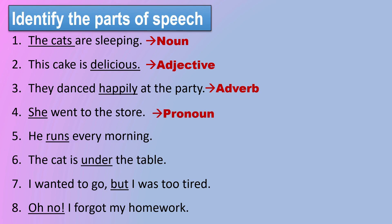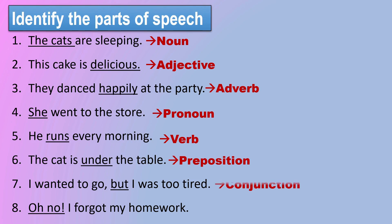"He runs every morning." In this sentence, runs is a verb. "The cat is under the table." In this sentence, under is a preposition. "I wanted to go, but I was too tired." In this sentence, but is a conjunction. "Oh no, I forgot my homework." In this sentence, oh no is an interjection.